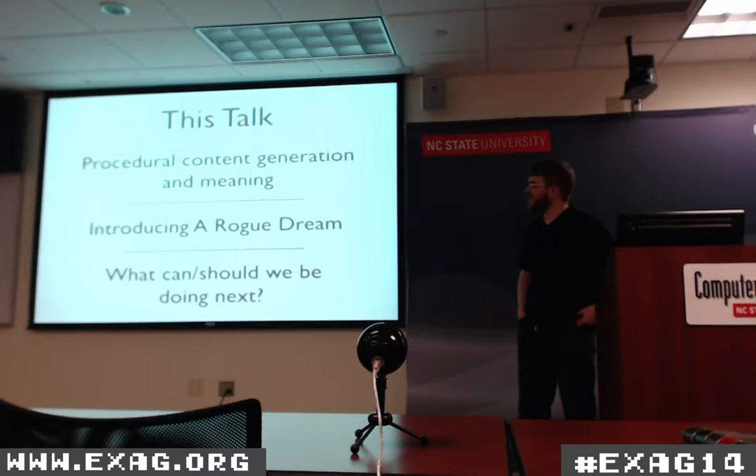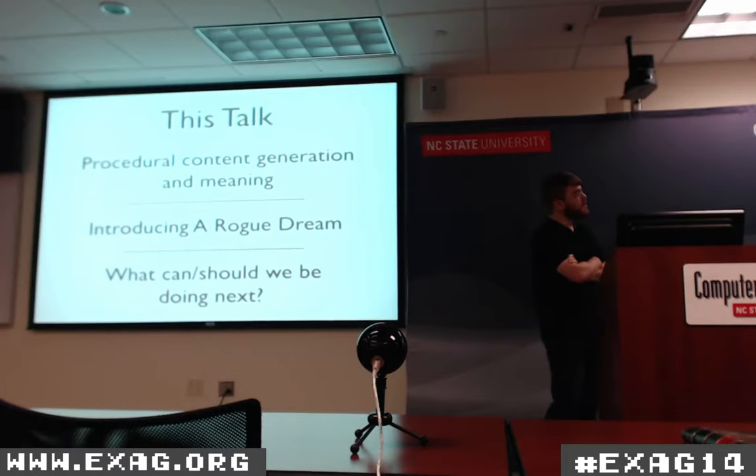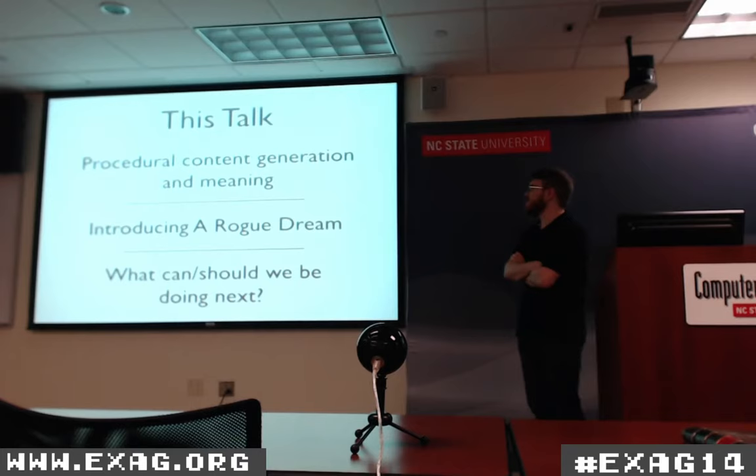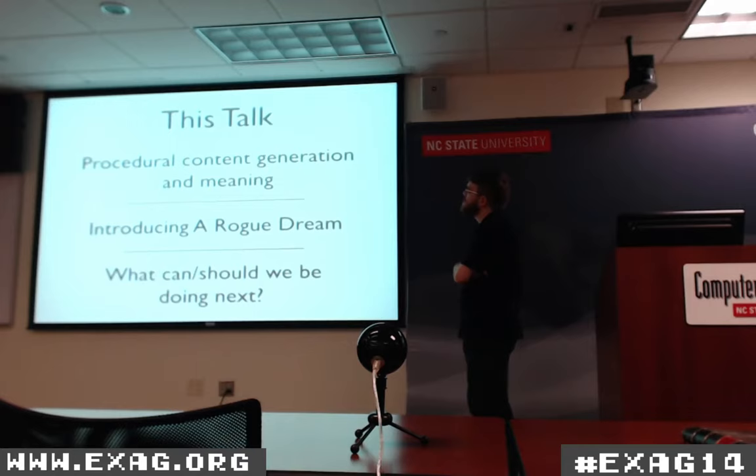This talk is a bit of a mess. I had a 22-hour day with two hours of sleep yesterday and a lot of coffee, and there could be anything in here really. I don't really remember making half of these slides. But there are going to be three basic things I want to talk about: procedural content generation and content generators that work with meaningful information; A Rogue Dream — what it is; and can we do stuff with real-world information, and should we be doing it?